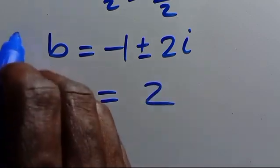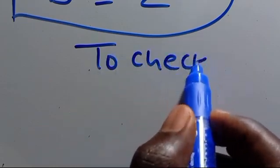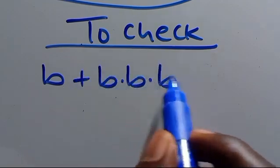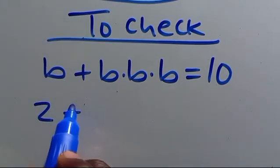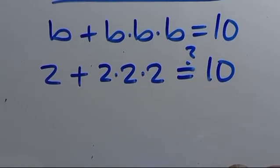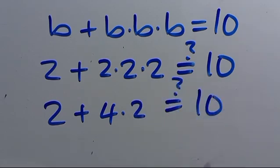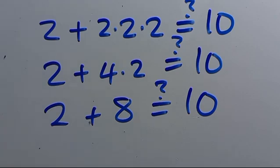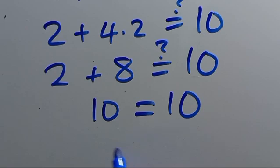So B equals 2 as well. To check: from here we have 2 plus 2 times 2 times 2, which is going to give us 10. Two times two is four; four times two is eight. So two plus eight is 10, which equals 10. The left-hand side equals the right-hand side.